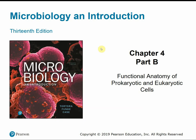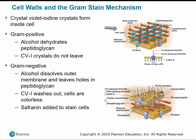This is Chapter 4, Part B: Functional Anatomy of Prokaryotic and Eukaryotic Cells. At the end of Part A, we left off talking about the differences between gram-positive and gram-negative cell walls. This difference forms the basis of the gram stain mechanism. The gram stain is probably one of the most important stains you'll learn in the laboratory because it can help determine the treatment for certain types of infections.